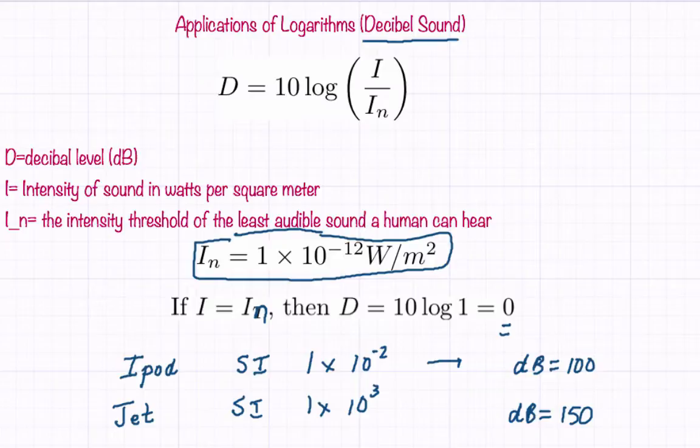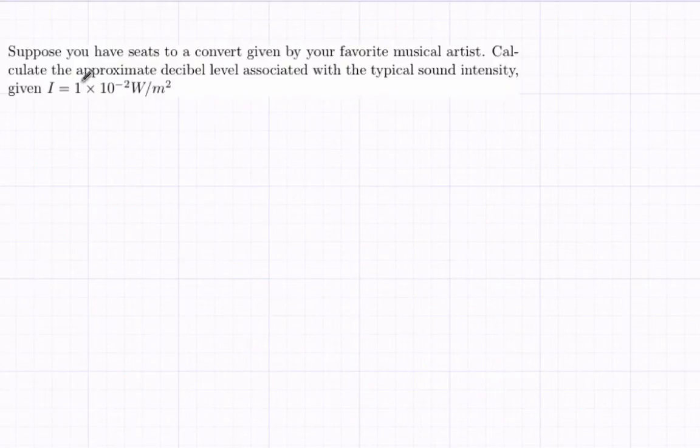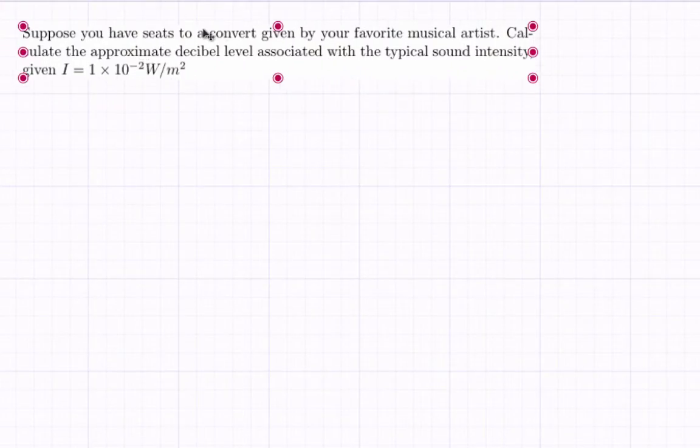We're going to look at one specific example of decibel sound. So let's get to that example. Suppose you have seats at a concert given by your favorite musical artist. Calculate the approximate decibel level associated with the typical sound intensity given by i equals 1 times 10 to the negative 2.